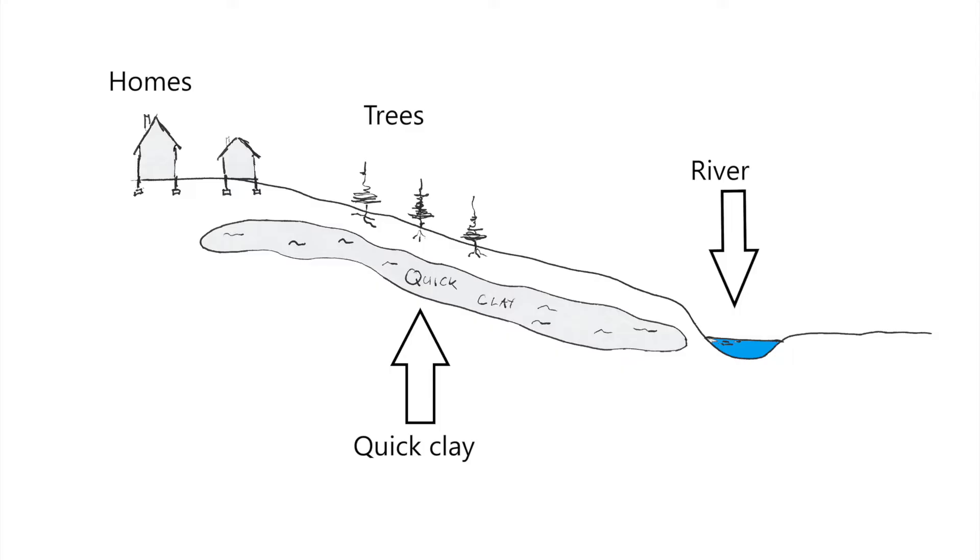So let's start with a simple Norwegian landscape illustrated here. There are some homes on the top of the hill, some trees on the slope and a small river in the bottom of the slope. What is unique is the quick clay pocket underneath the slope. The quick clay pocket is very stable if it is not disturbed.